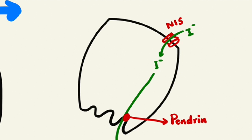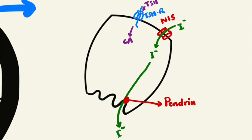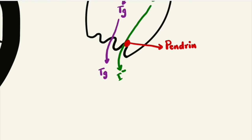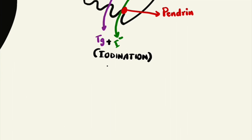Along with the sodium iodide symporter on the basolateral surface, there is a receptor called the TSH receptor. The function of the TSH receptor is that whenever TSH comes and acts on it, it increases the production of cyclic AMP, which in turn increases the production of thyroglobulin. This thyroglobulin enters the thyroid follicle, where it binds with iodide resulting in the formation of monoiodotyrosine and diiodotyrosine. This process is called iodination or organification.